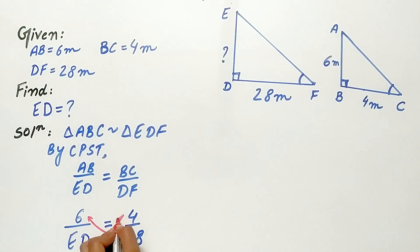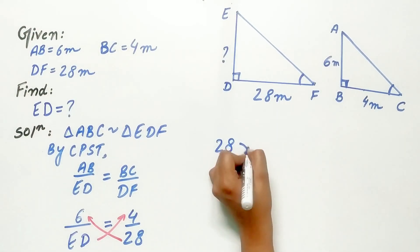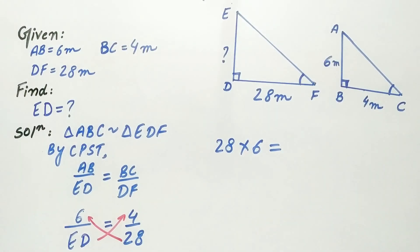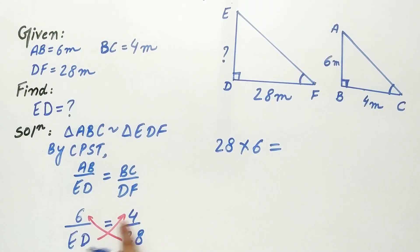Now cross multiply the terms. 28 multiply 6 is equal to ED multiply 4.